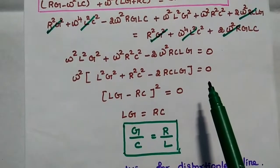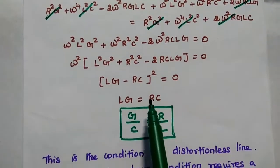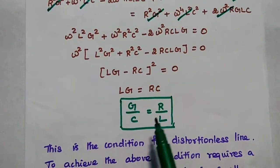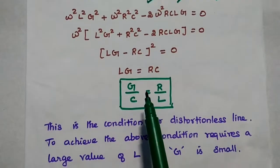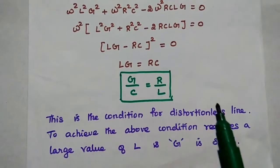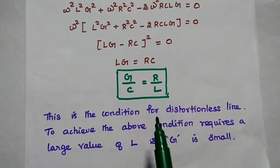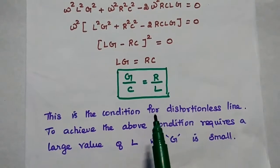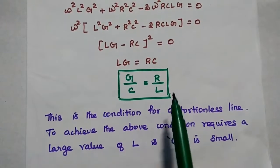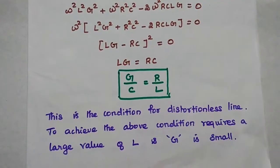Moving omega squared to the right-hand side, it becomes zero. Then we get lg equal to rc, from which g by c is equal to r by l. This is the condition for the distortionless line. To achieve this condition, it requires a large value of inductance and a very small value of G. This is the primary constant relation for the distortionless line.